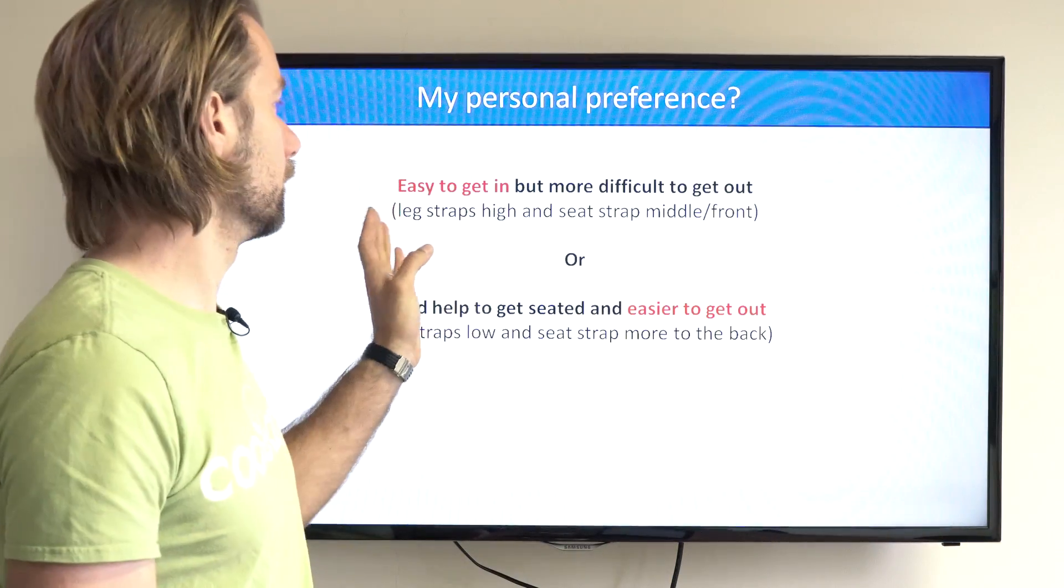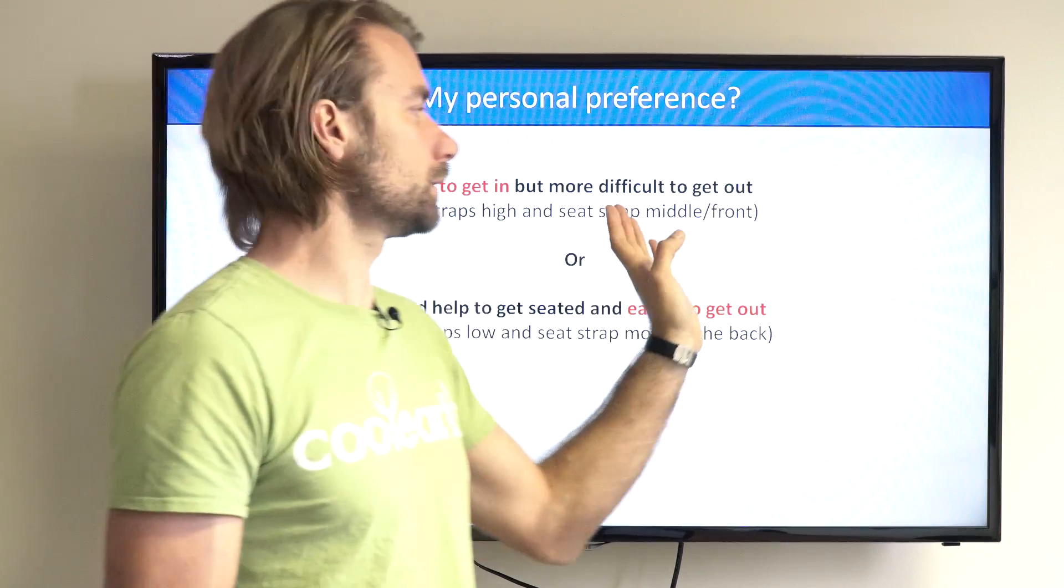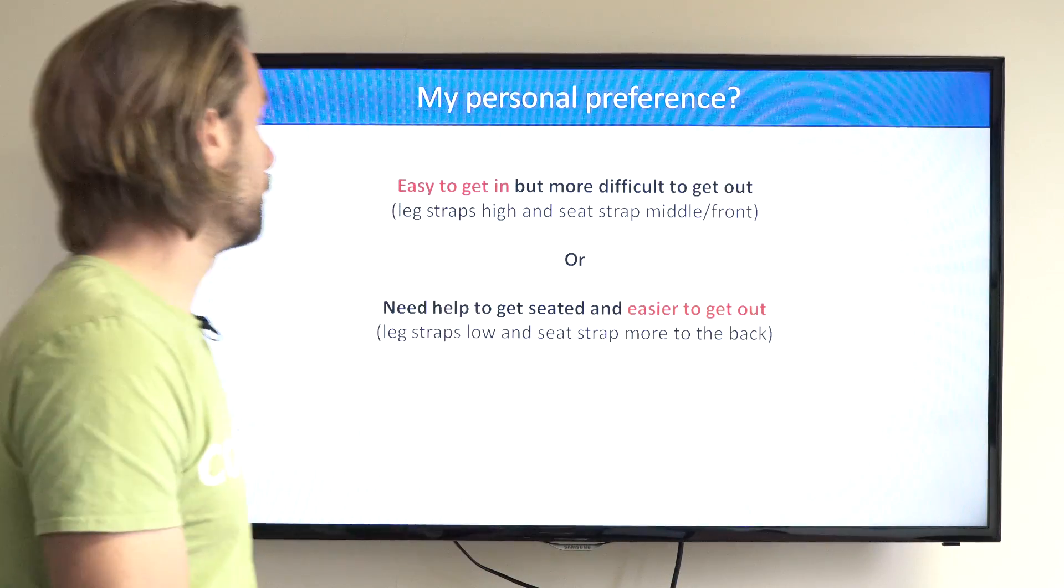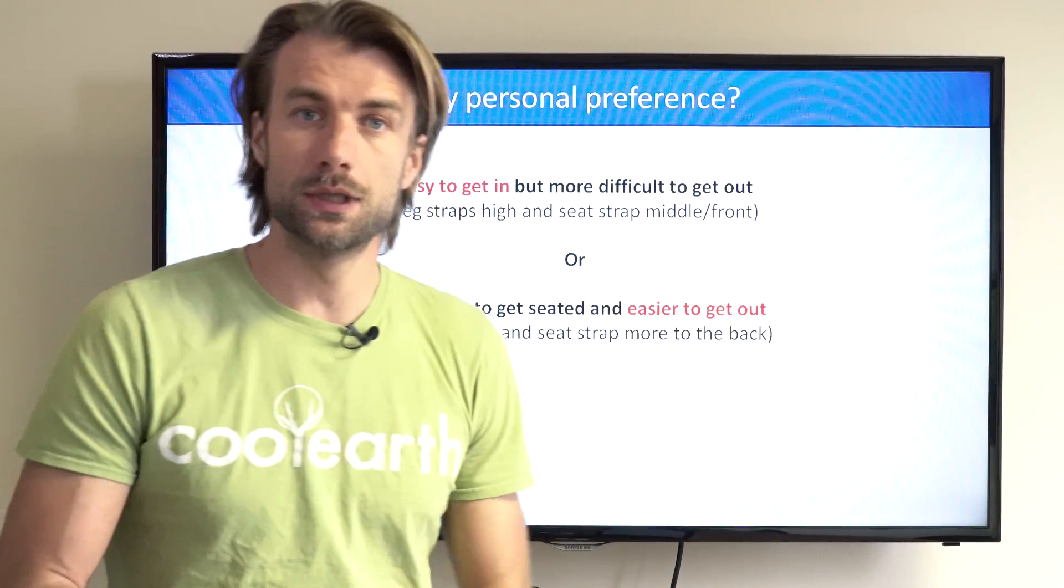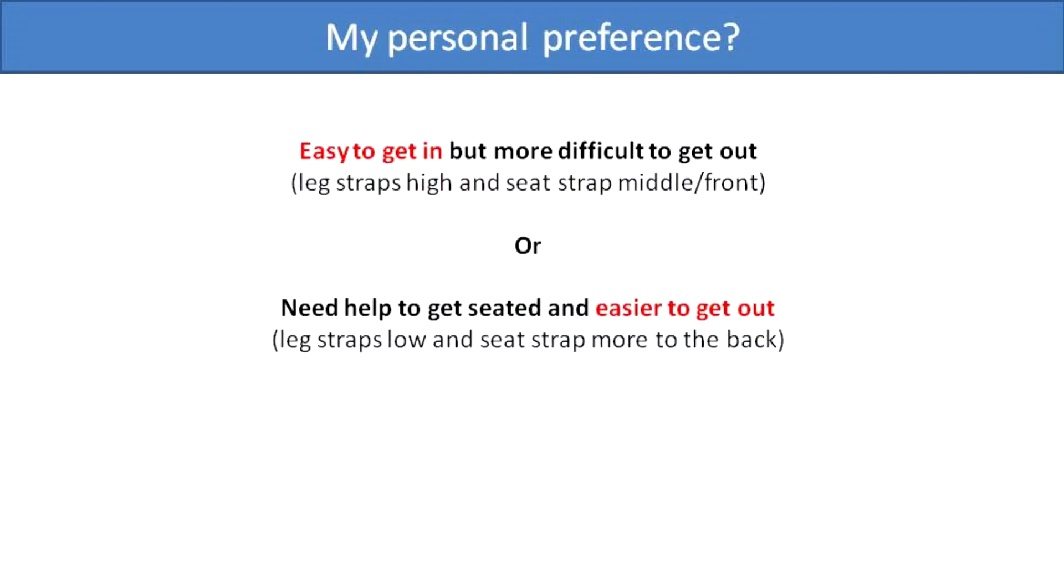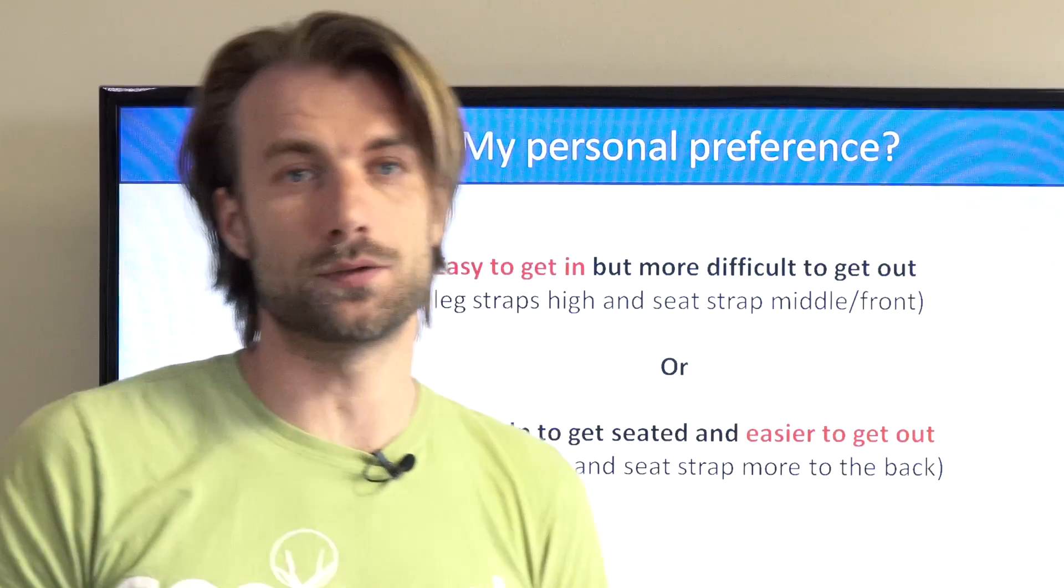Putting the leg straps high and the seat strap to the front will make it easier to get into the harness but more difficult to get out. The other option is to put the leg strap low and the seat strap more to the back that will make it more difficult to get into the harness but easy to get out.